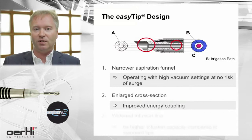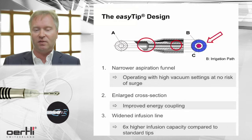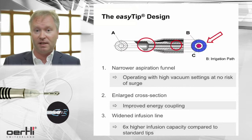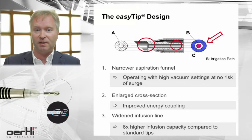The third change is related to the infusion line. Given that the aspiration funnel has been made narrower, there is more space now for the infusion line, giving you a high infusion capacity which is around six-fold higher than compared to standard conventional tips.